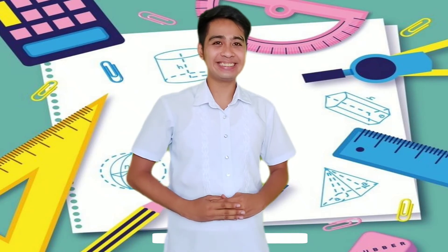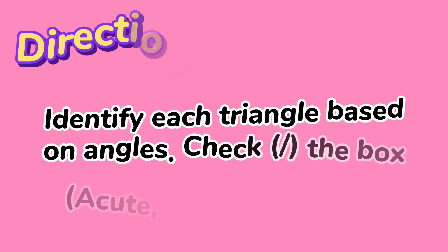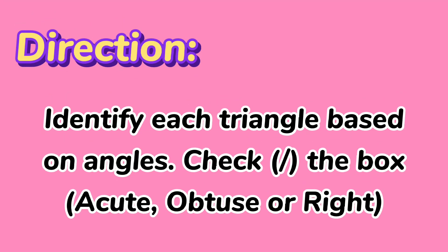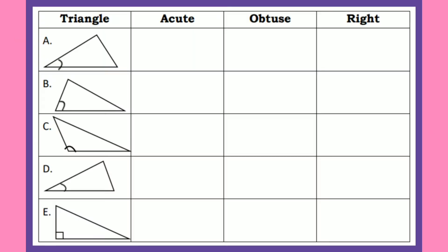How about this activity? You are going to identify each triangle based on angles. Check the appropriate box whether it is acute, obtuse, or right. Letter A: very good — acute triangle. Letter B: it's an acute triangle.